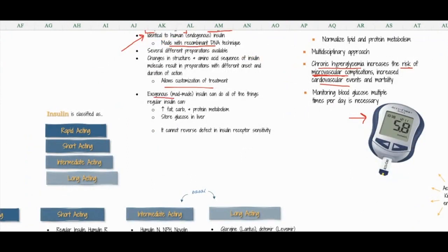This is important to know: exogenous or man-made insulin can do all the things regular insulin can, so it increases your fat and carbohydrate protein metabolism, stores glucose in the liver—all the same things.